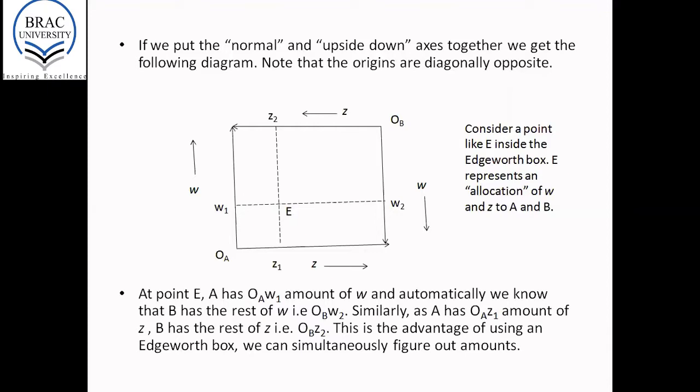Once we know that A is consuming OAW1 amount of W, we automatically know how much W B is consuming. So move from W1 to the right to W2 on the vertical axis of consumer B. Because individual A or consumer A is consuming W1 amount of W, automatically we know that consumer B is consuming W2 amount of W.